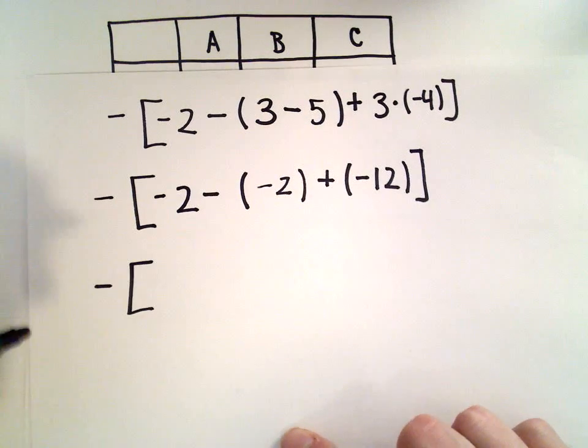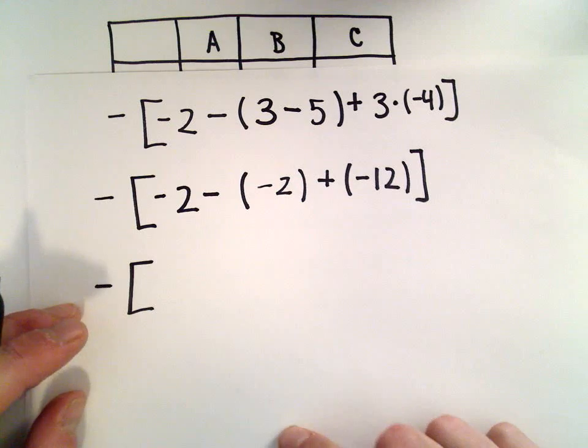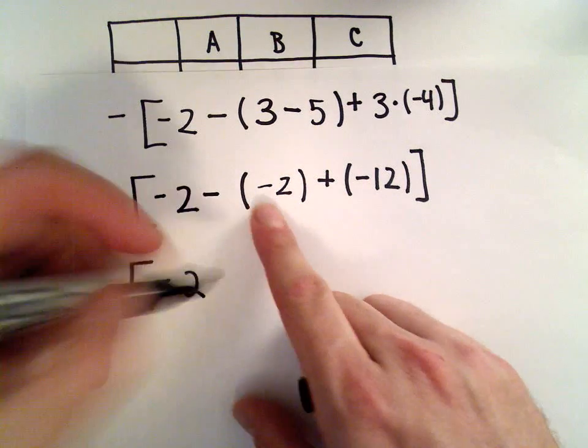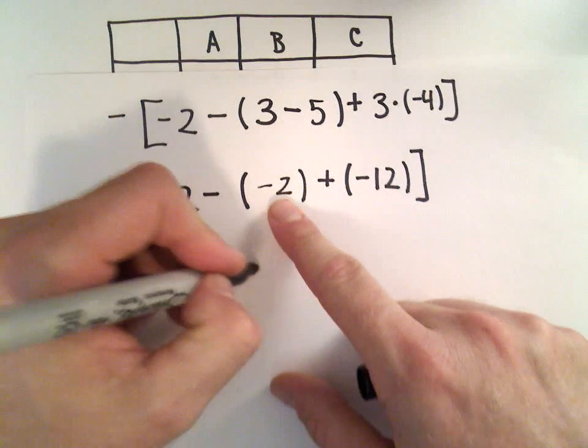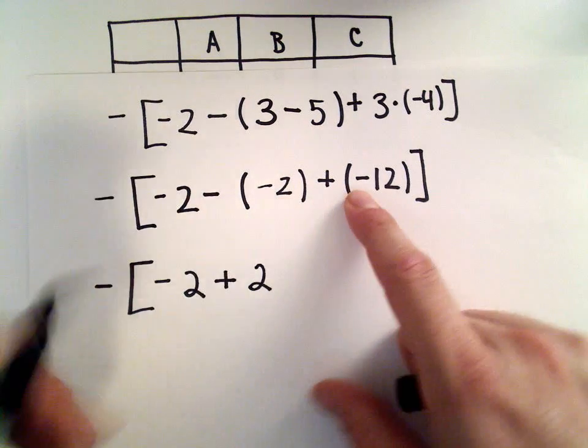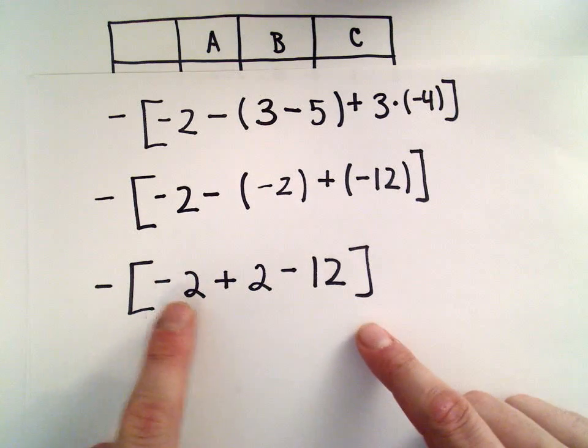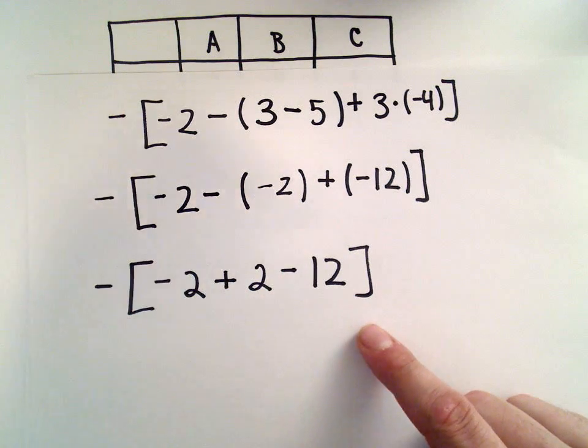Alright, so lots of negatives floating around here. I'm going to get rid of these parentheses and try to clean it up. There's my negative 2. I've got a negative and a negative, which is going to be a positive. I still have the 2. A positive and a negative is a negative. So inside the brackets, I've got negative 2 plus 2 minus 12.